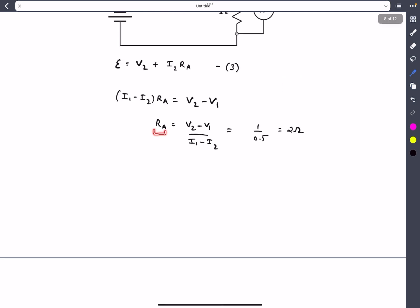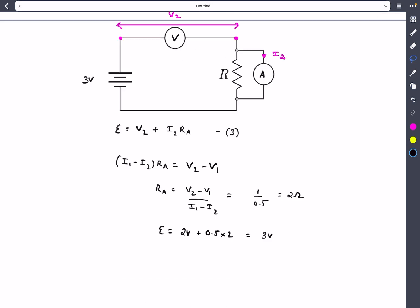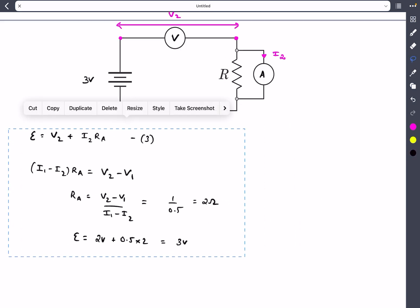Now once we have the resistance of the ammeter, observing equation three, V₂, I₂, and Rₐ are known so we can figure out E. That turns out to be 3 volts. Now once we know E, we can write down one more equation conserving the currents.